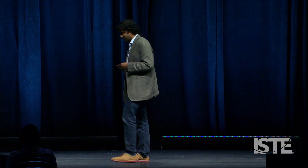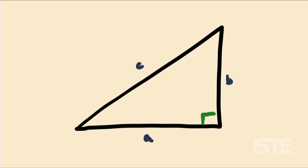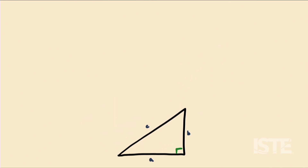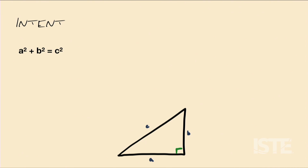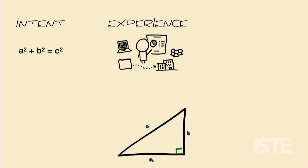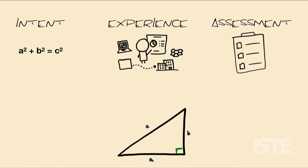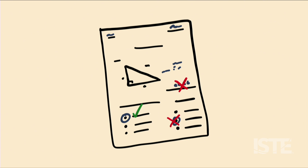Let's consider a school example. I started my career in education as a math teacher — right triangles. The intent would be to learn or understand the Pythagorean theorem. The experience my students might go through: some combination of direct instruction, activities, classwork, homework, maybe some interdisciplinary exploration. And the assessment might be some performance or demonstration of understanding — a quiz, a test, something that is scored.